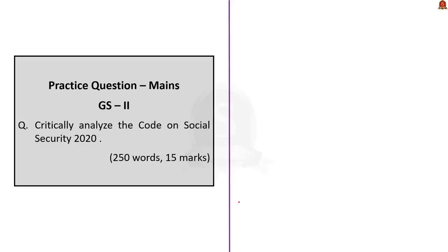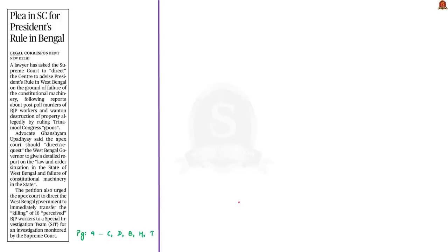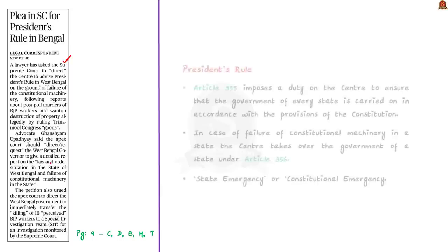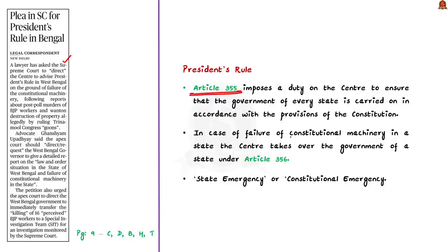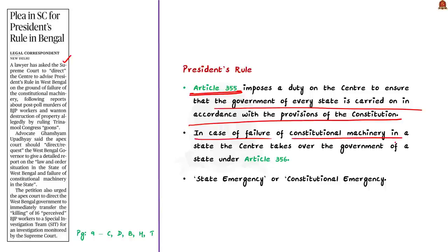Now look at this article: a lawyer has asked the Supreme Court to direct the center to impose President's Rule in West Bengal on the grounds of failure of constitutional machinery. In this context, let us learn about President's Rule. Article 355 imposes a duty on the center to ensure that the government of every state is carried on in accordance with the provisions of the Constitution. In case of failure of constitutional machinery in a state, the center takes over the government of a state under Article 356, popularly known as President's Rule, also called state emergency or constitutional emergency.